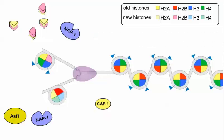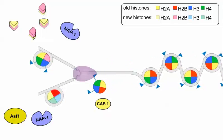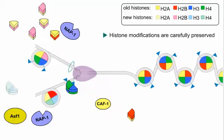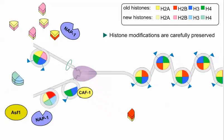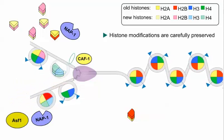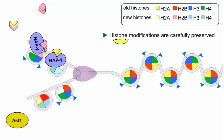This process of nucleosome assembly after DNA synthesis is carefully orchestrated to preserve information carried in the histone modifications. Because the accessibility of DNA is controlled by the modifications of the histone N-terminal tails, the inheritance of this information is critical to the survival of each daughter cell.